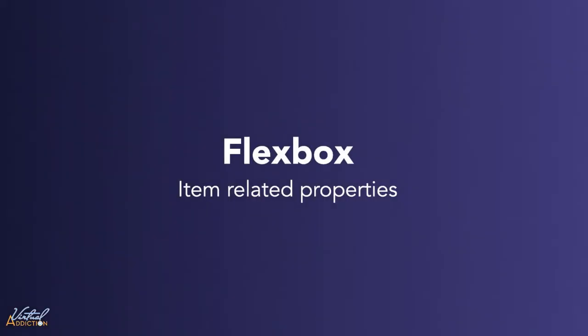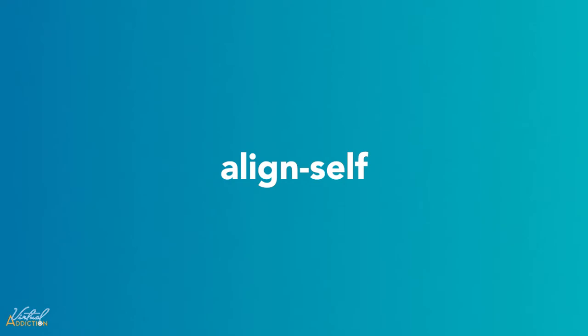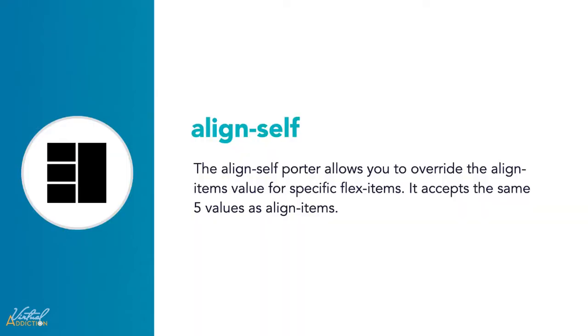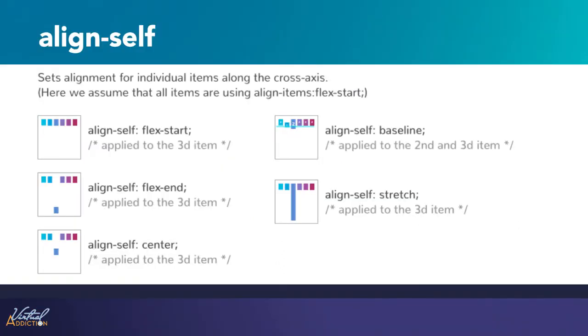Let's continue to look at the Flexbox item related properties. The first one we're going to look at is alignSelf. The alignSelf property is a subproperty of the Flexbox layout module. It makes it possible to override the alignItems value for specific flex items. It accepts the same five values as alignItems.